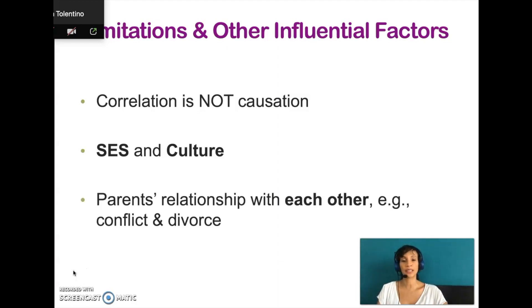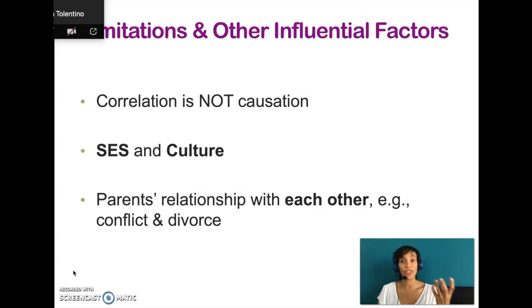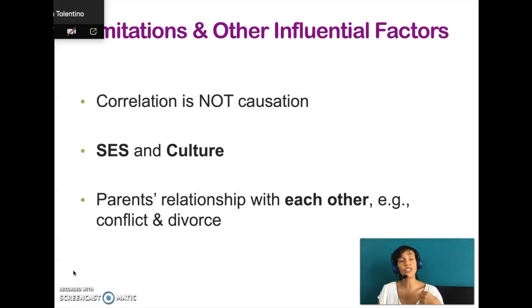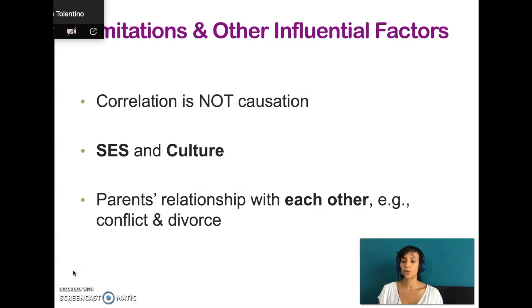There are other factors to consider as well, such as the parents' relationship with each other. The harmful effects of chronic parental conflict diverts parents' attention from high-quality parenting. Parents need to be united as a team and respect their individual differences in how they parent. Students often ask about two different parenting styles within the same family — research shows that teens are generally better off having at least one authoritative parent. There's also the effect of divorce on children, which is more impactful on teenagers and children who are temperamentally emotional tend to be hit hardest by divorce.